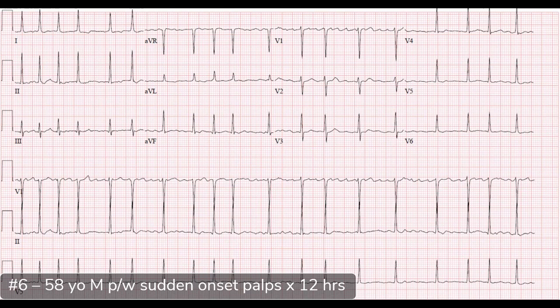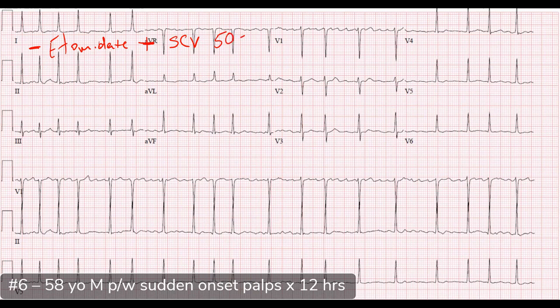For electrical cardioversion: I would give medication to sedate him. In a relatively healthy patient, etomidate is a reasonable option — it's short acting. I usually use about half of a typical sedation dose, so instead of 0.3 mg/kg, I'll use somewhere in the 0.15 to 0.2 mg/kg range. We're going to synchronized cardiovert this patient. For AFib and flutter you can cardiovert at lower doses than ventricular tachycardia — I'll usually start at 50 to 75 joules before jumping to 100.